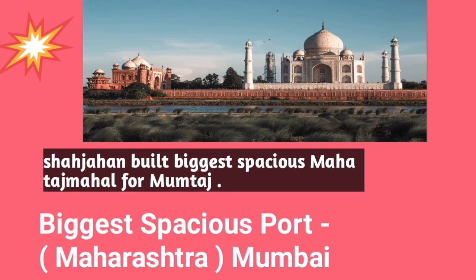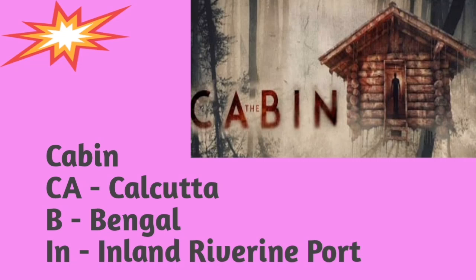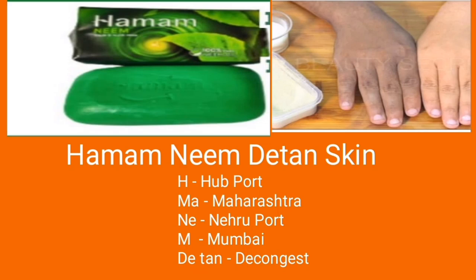The next mnemonic is the word 'CABIN' — also a movie title. CA stands for Kolkata, B stands for Bengal, and IN stands for Inland Riverine Port. So Kolkata is an Inland Riverine Port in Bengal. Next, remember this sentence: 'Hamam Neen D Tan Skin.'